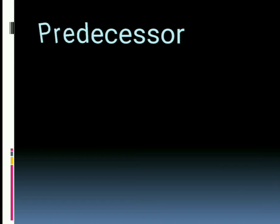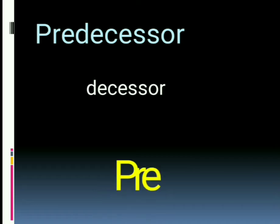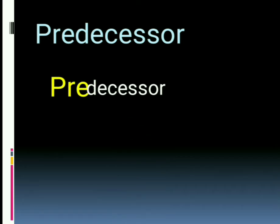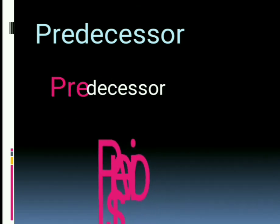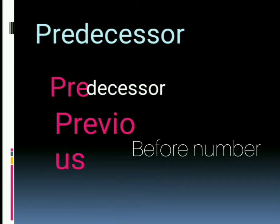Children, have you ever observed the word predecessor? In this word, the first three letters are P-R-E, that means 'pre.' You should understand: pre means previous. Previous means before number, or minus one. If you remember like this, you will never forget the concept.